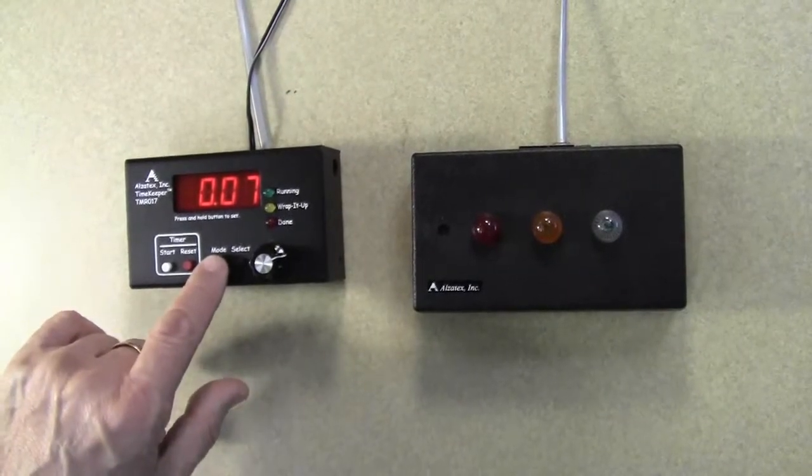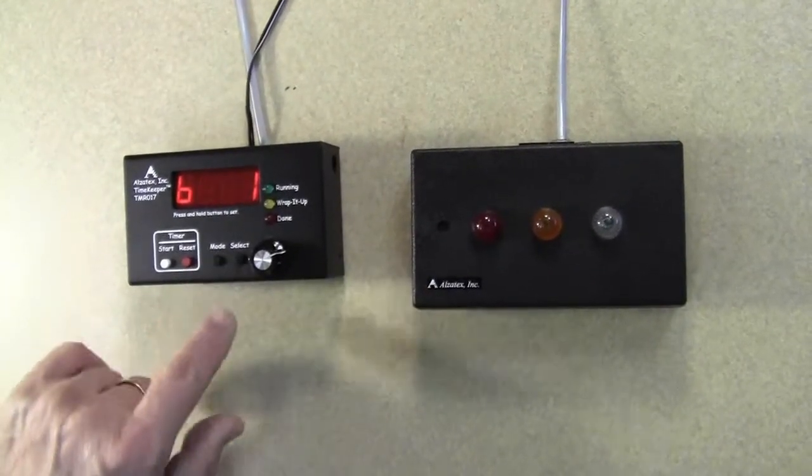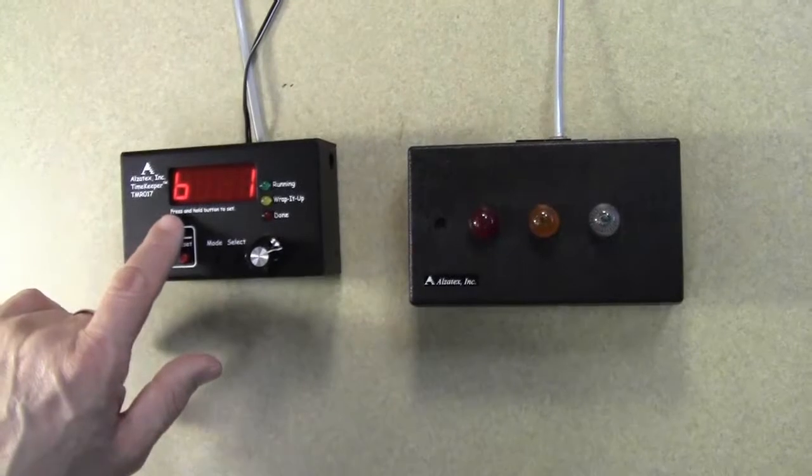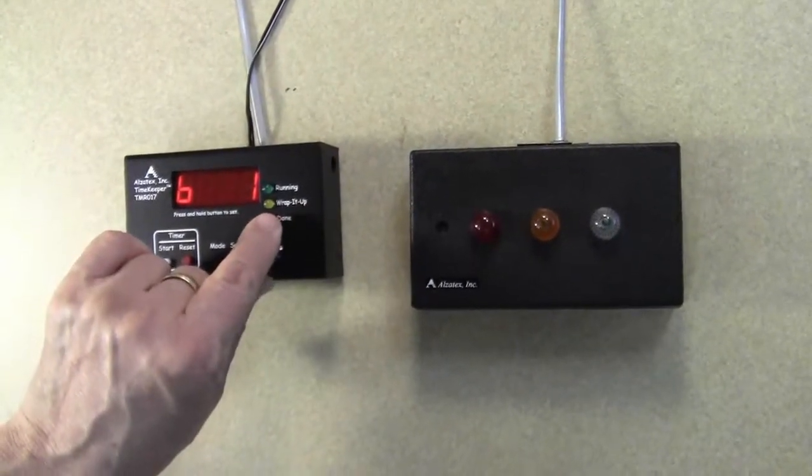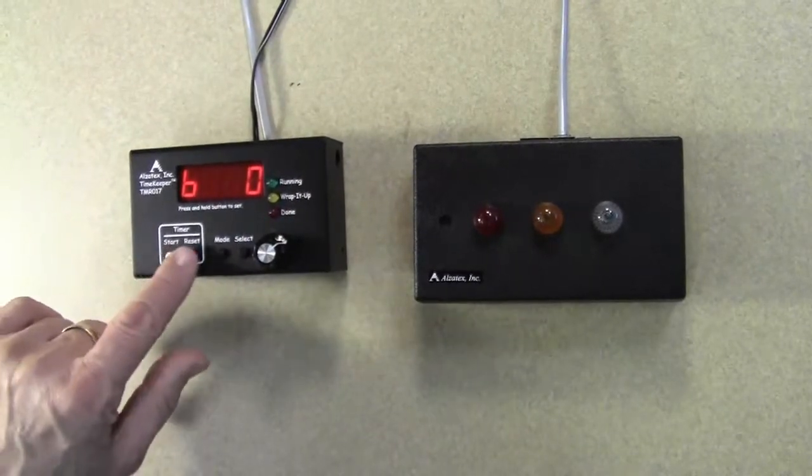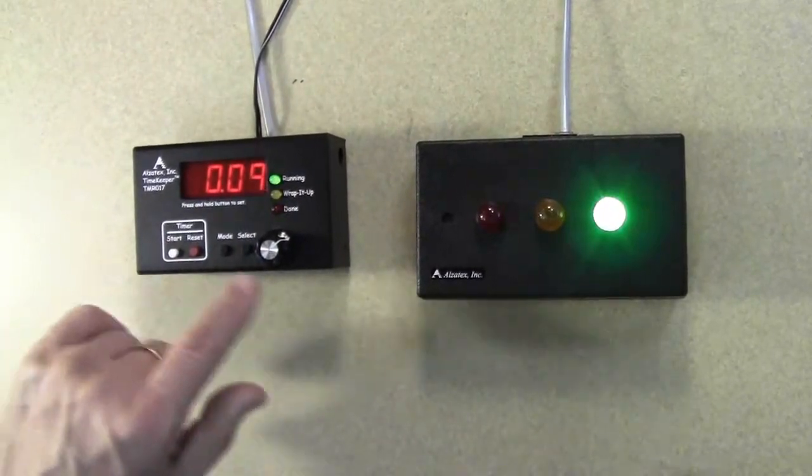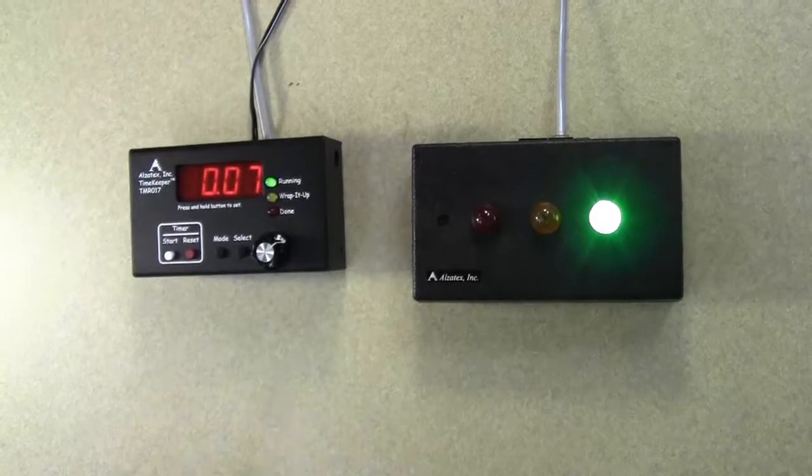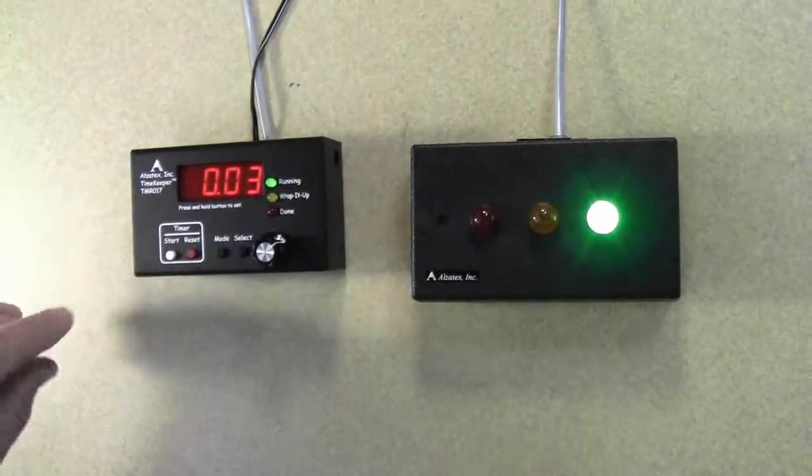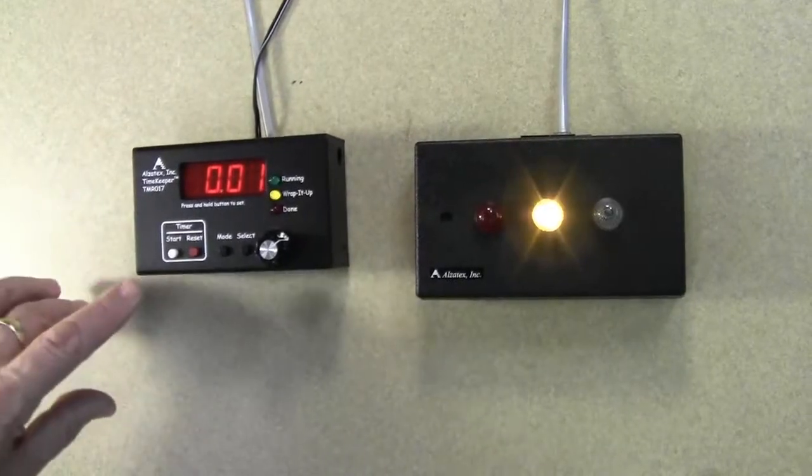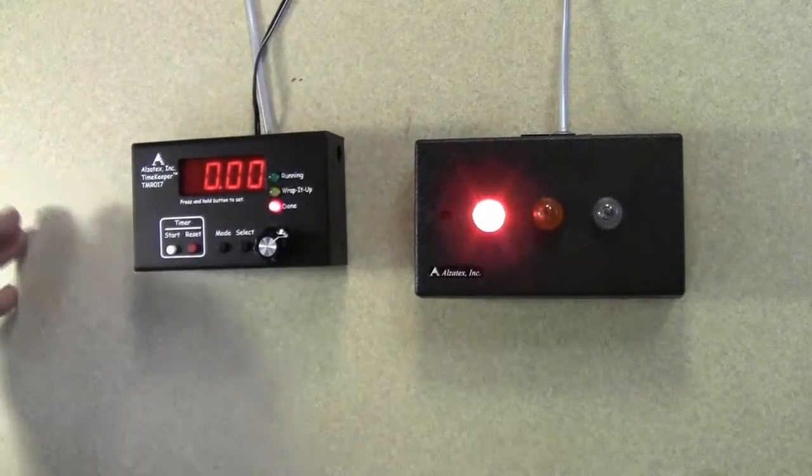I'm going to stop it. I'm going to press and hold the mode button, and you'll see B1. That means beeper is in the one mode. So I'll return this to zero. I press reset and start, and it's going to start counting down to zero. And as it counts down to zero, you're going to see that there is no beeper sound. It turns yellow, it turns red, and no sound.